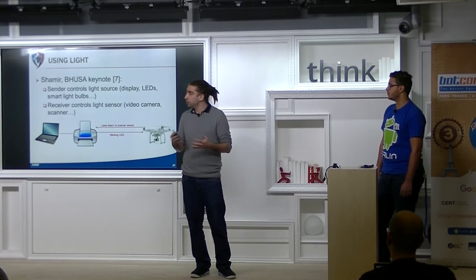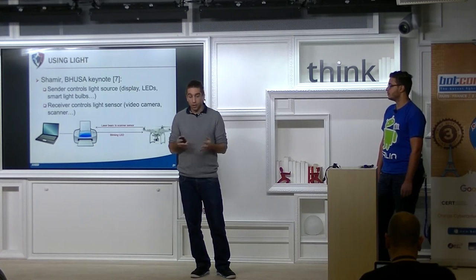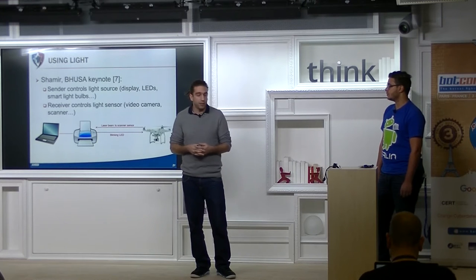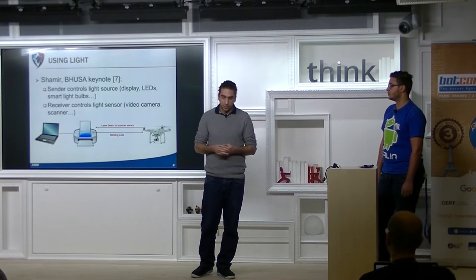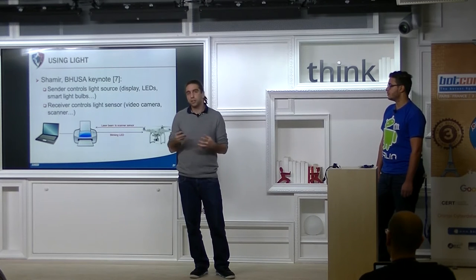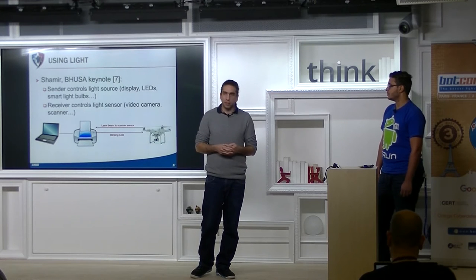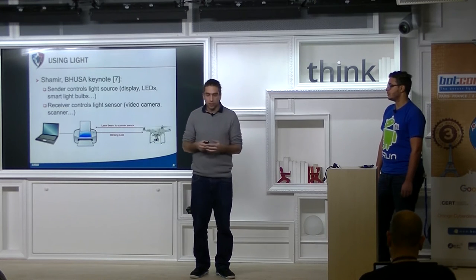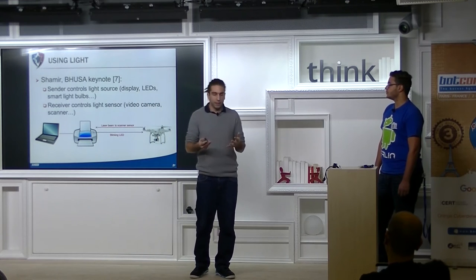It's also possible to use light to establish a communication channel. Referring to Shamir's keynote last year at Black Hat: the sender has to control a light source — this can be the computer display, the LEDs on the keyboard, or smart light bulbs. The receiver has to control a light sensor.